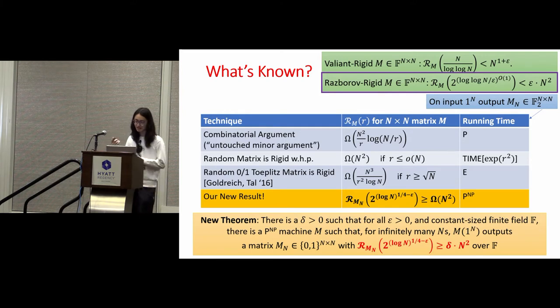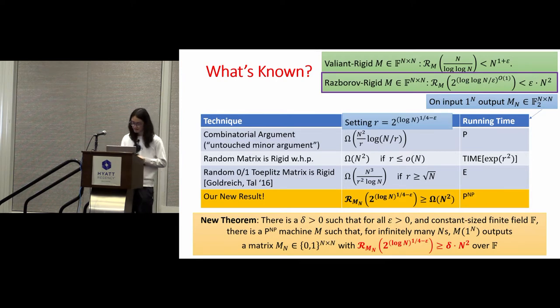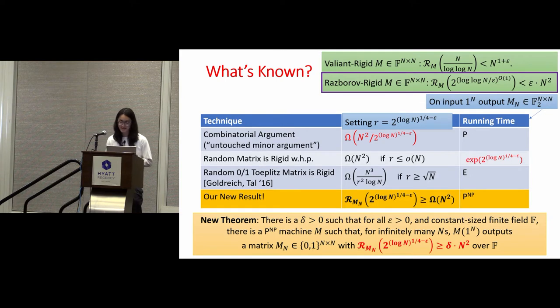Here's our new results. We show that there's a constant delta greater than zero such that for all constant epsilon and constant finite field F, there's a P to the NP machine M such that for infinitely many N's, M outputs a matrix M such that M is delta times N square distance away from any matrices with at most rank 2 to log N to 1/4 minus epsilon. As you can see, this rank parameter is much larger than the requirement by Razborov, and also it's much larger than any polynomial function but smaller than a polynomial. To compare with the previous results, we can see plugging in the parameter, the first one is not as rigid and the second one has a huge running time comparing to a polynomial, and the third one is also not rigid and has an exponential running time.